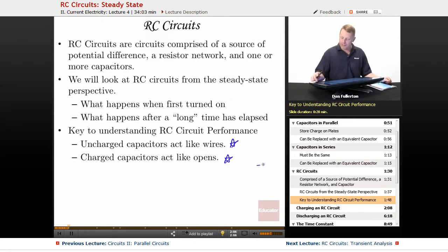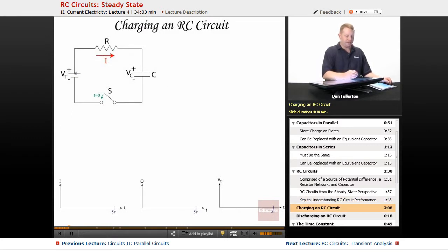So let's take a look at charging an RC circuit. Here we have a source of potential difference VT, a resistor R, and a capacitor C. We've defined the positive and negative side of our capacitor, and at time t equals zero we're going to close this switch and see what happens.